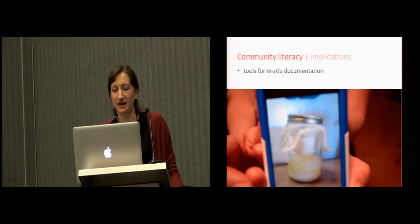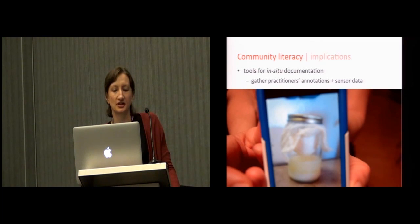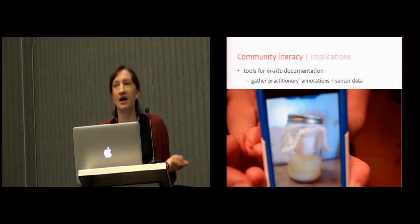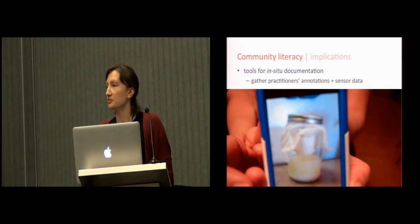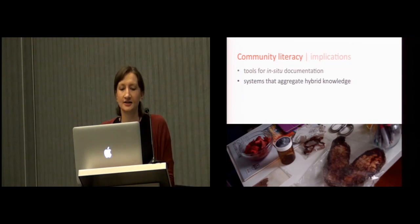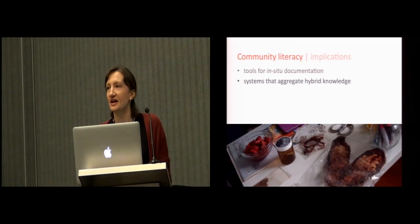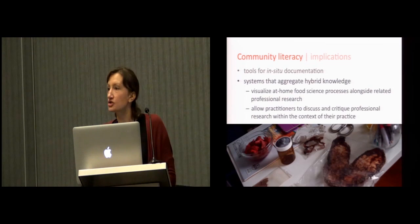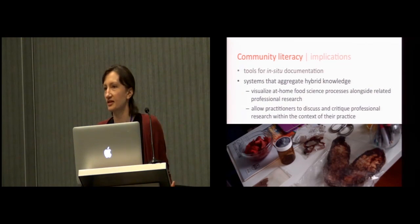I've talked about the importance of trial and error and also the fact that all of the participants document their work to document their experiments. So, here, there's an opportunity for in-situ documentation and sharing technologies. New tools can allow practitioners to annotate and document their projects and methods and outcomes. And these annotations might also be combined with sensor data: images, videos, and also measurements such as pH and temperature and carbonation levels of different projects. In addition, we suggest putting this type of documentation within the context of professional research, in other words, aggregating at-home and professional science knowledge. For instance, systems might visualize at-home food processes alongside professional research. And this, of course, would allow the practitioners to deliberate and discuss some of the professional research within the context of their practice.